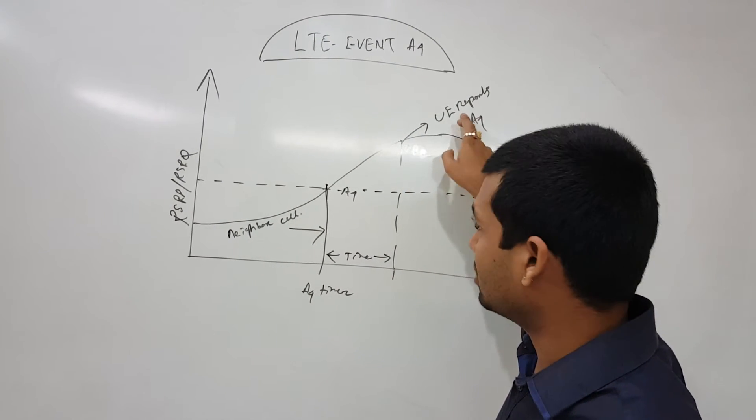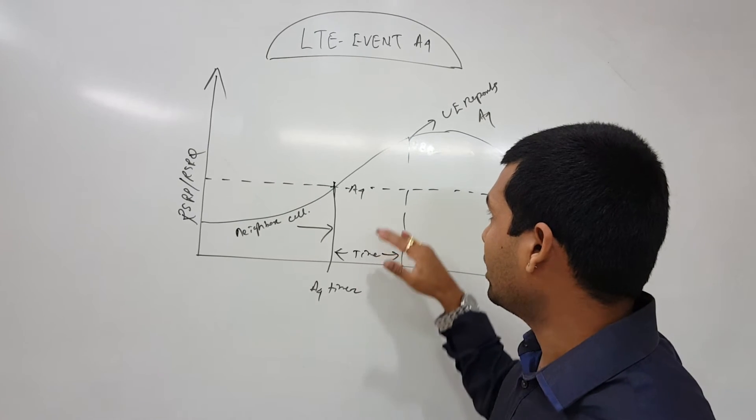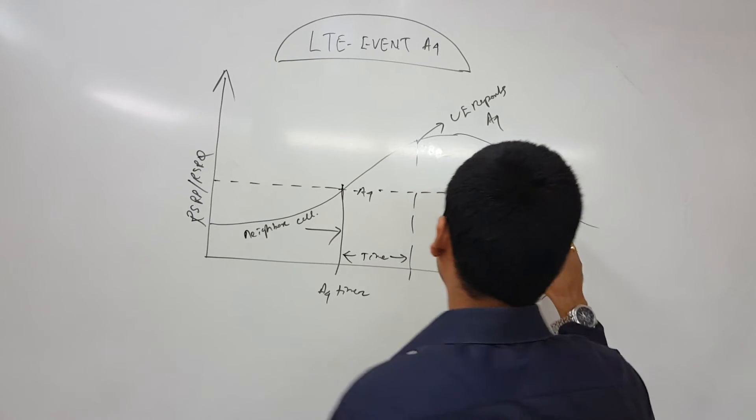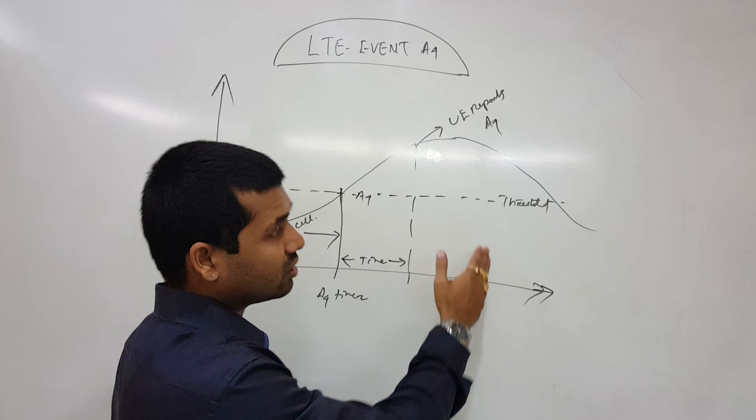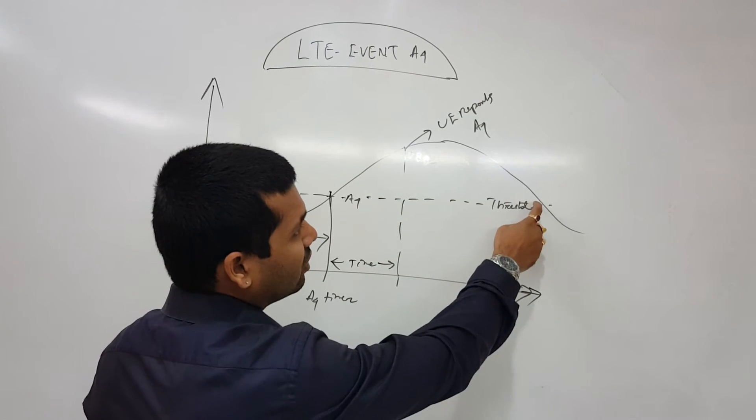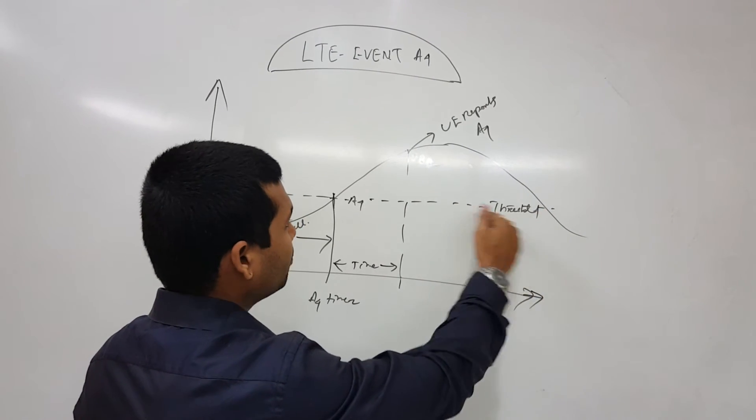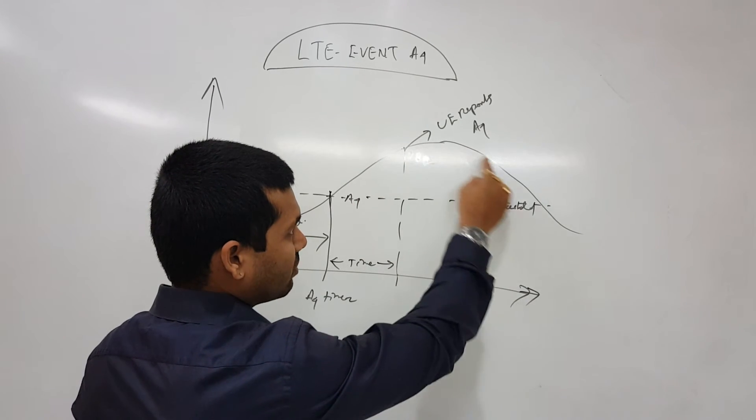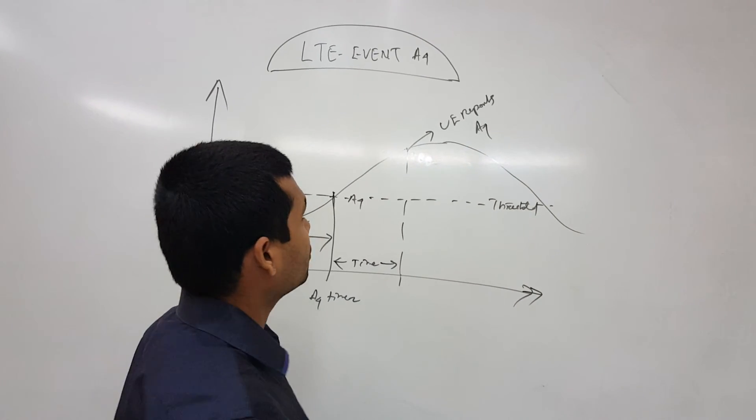And it continues—still it continues reporting till the A4 again drops back below that threshold. So that's why I have drawn this picture like this. This is all about the A4 event.